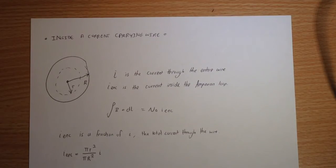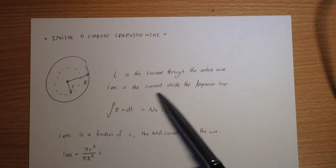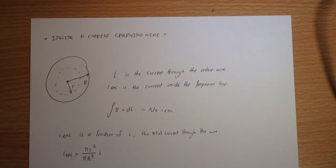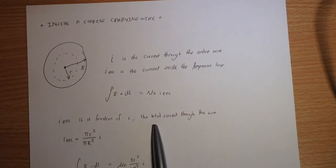So what we do is we consider i as being the current through the entire wire, and then we consider i enclosed as being the current inside the Ampereian loop. So now what we're going to do here is we're going to make an assumption that the current density is uniform across the entire wire. Otherwise, the calculation gets a little bit messy. We have to introduce things like current density. In this case, we're just going to be looking at a straightforward general case where we assume that it's a constant, nice flow, a uniform flow throughout the entire wire.